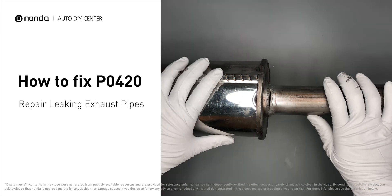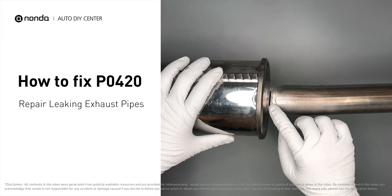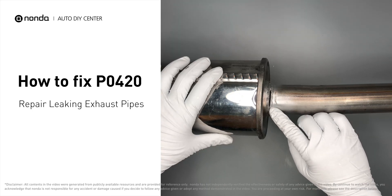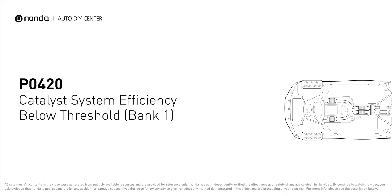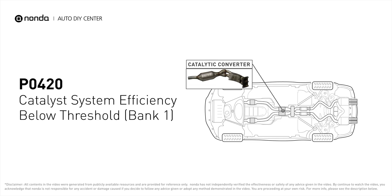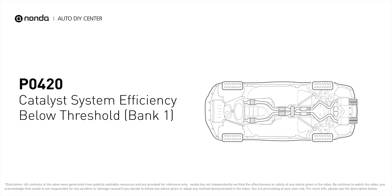By repairing the leaking exhaust pipes, you can easily fix the P0420 error code by yourself. P0420 is one of the most common error codes. It means your catalyst system efficiency is below threshold near engine bank 1, which indicates that the catalytic converter is not functioning efficiently, so the vehicle is increasing the output of harmful pollutants.